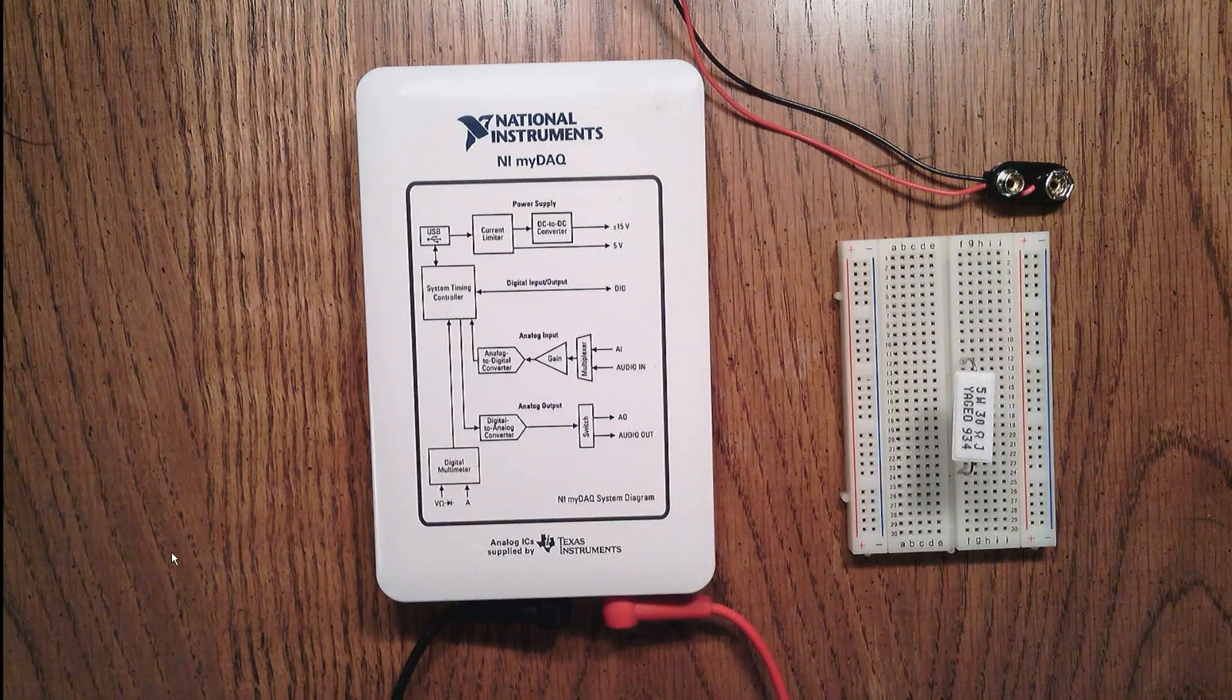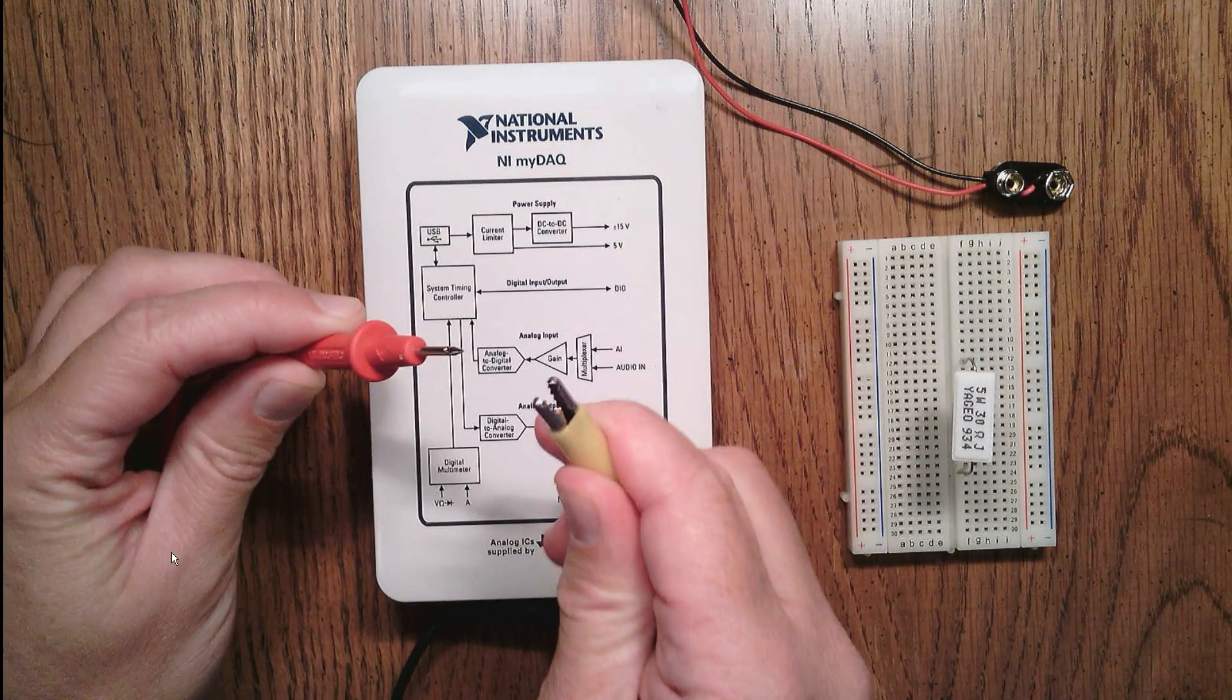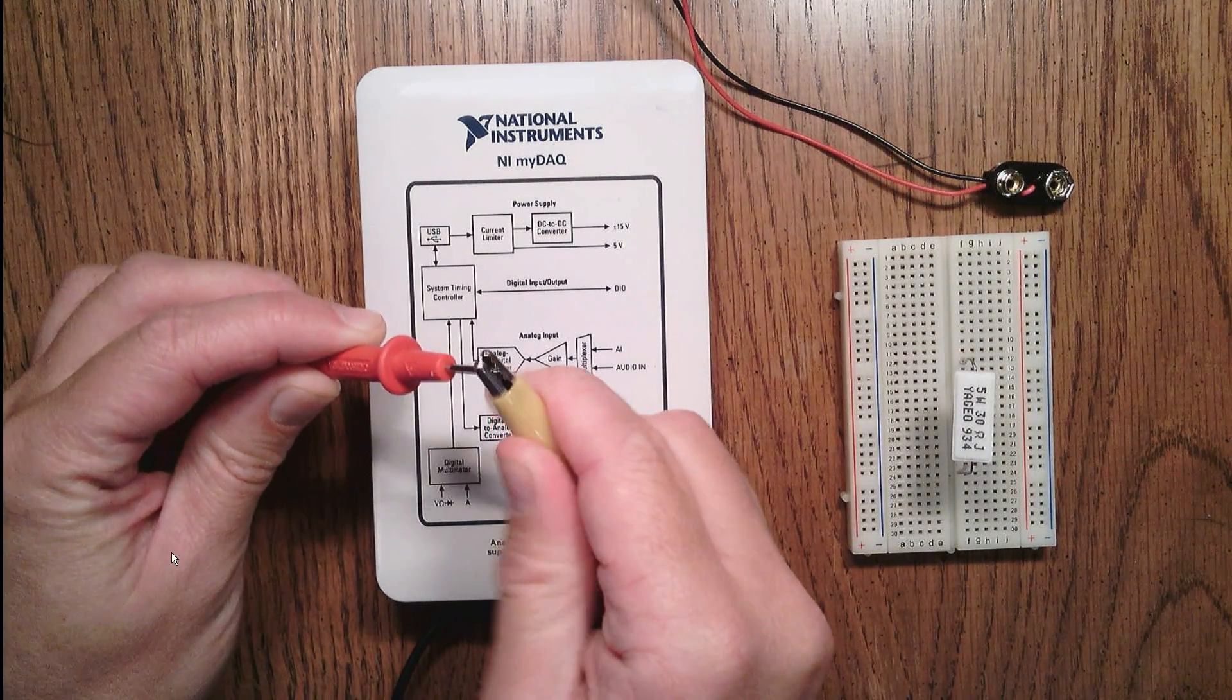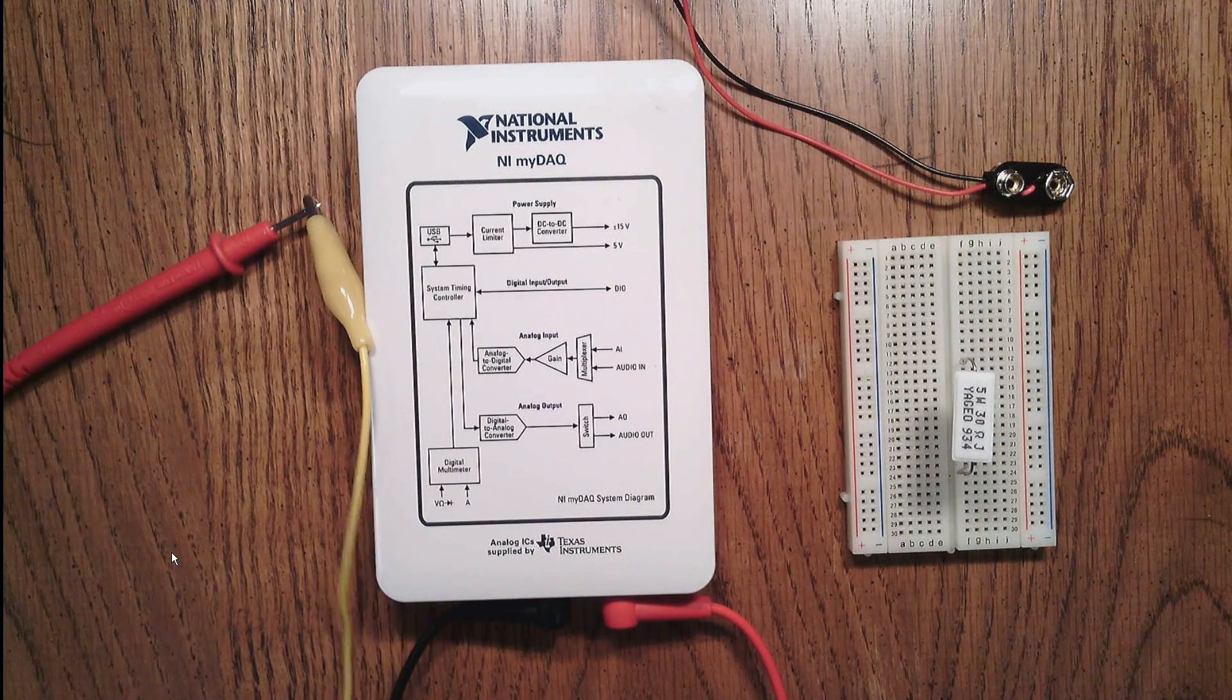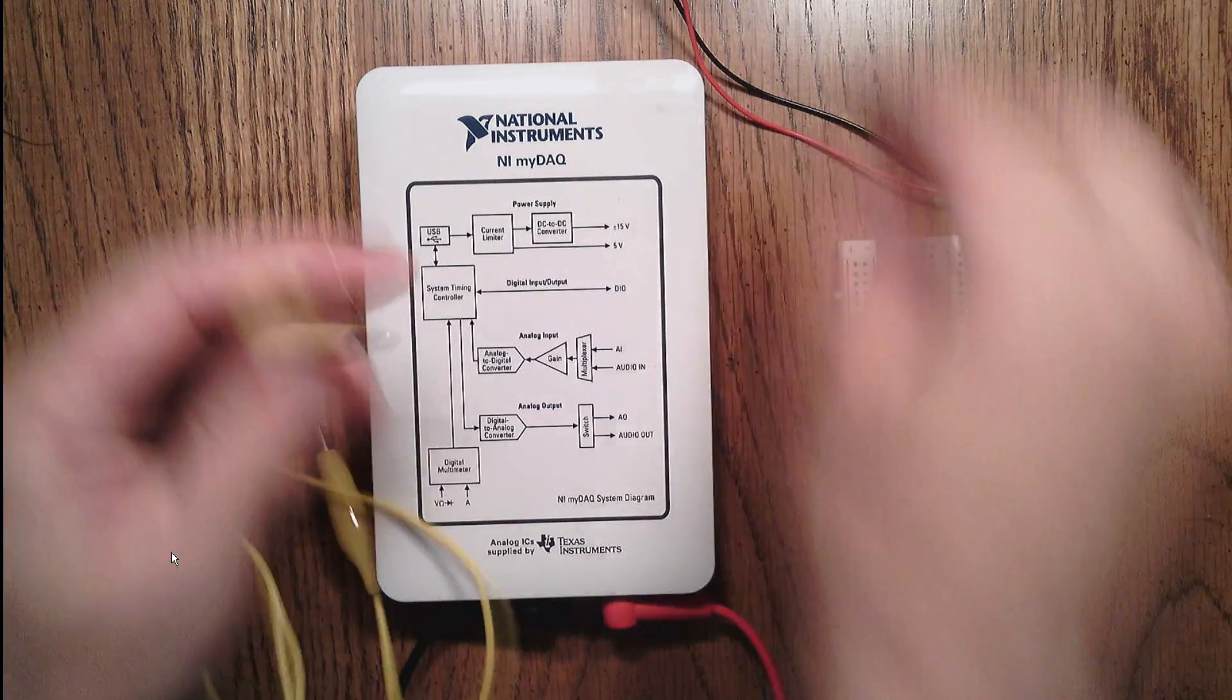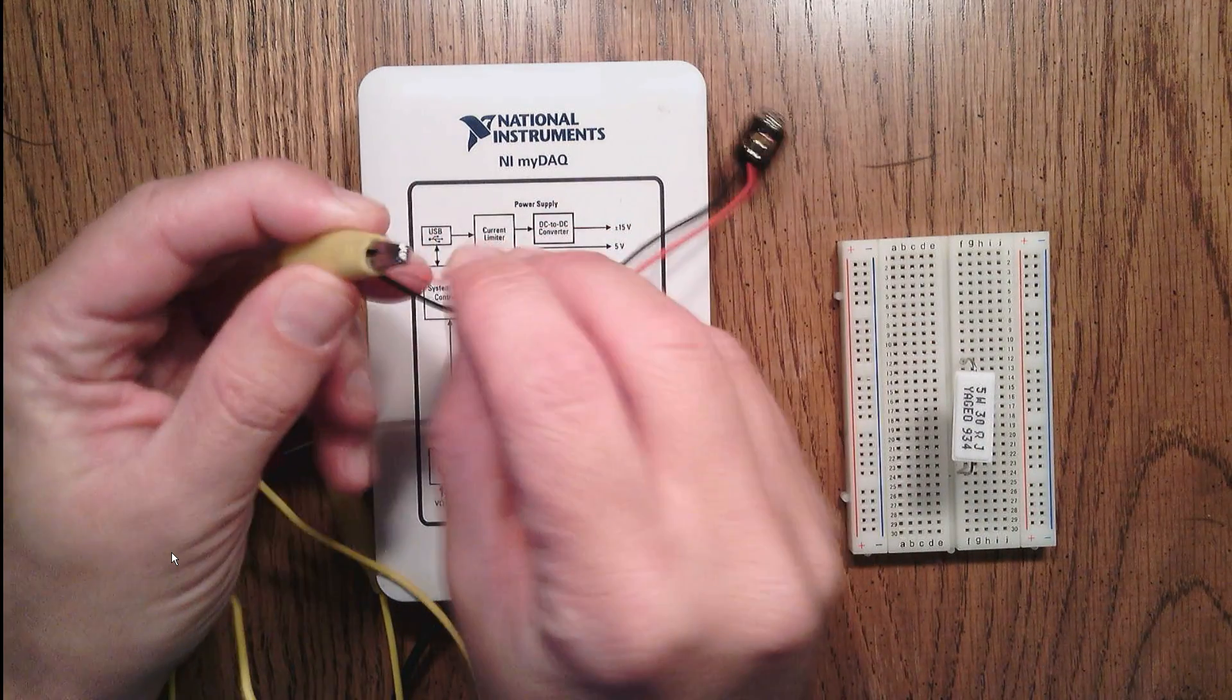The easiest way to do that is to use alligator clips. So I'm going to connect my alligator clip to the high side test lead of the ammeter as well as to the high side lead coming from the battery.